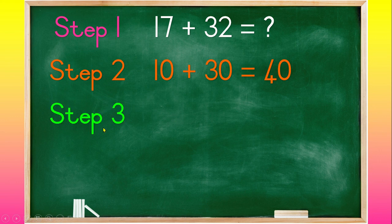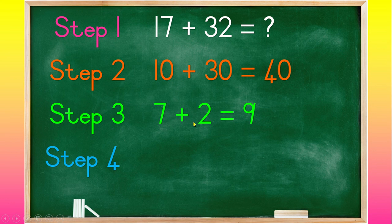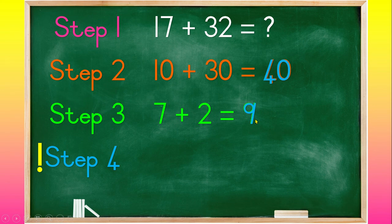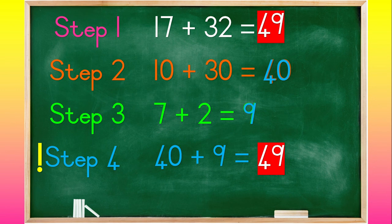Step 3 is to add the ones. Step 4 will always be to add the answers. So 40 plus 9 equals 49, because 40 is the answer and 9 is the answer. Therefore, 17 plus 32 equals 49.